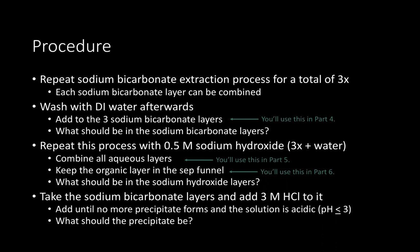Next you'll move on to what is effectively part four. Take the sodium bicarbonate layers and add 3 molar hydrochloric acid to it. You're going to add the hydrochloric acid until no more precipitate forms and the solution is determined to be acidic using pH paper — you're looking for a pH of less than three.